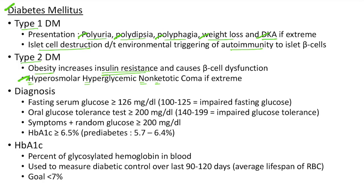Diabetes mellitus can be diagnosed if one of these is present: fasting serum glucose ≥126 mg/dL (100-125 is impaired fasting glucose); oral glucose tolerance test ≥200 mg/dL after 2 hours (140-199 is impaired glucose tolerance); symptoms of DM plus random glucose ≥200 mg/dL; or HbA1C ≥6.5% (5.7-6.4% is pre-diabetes).